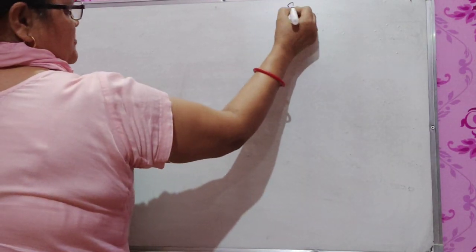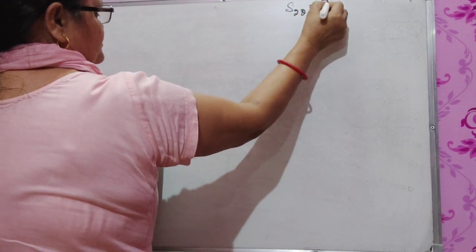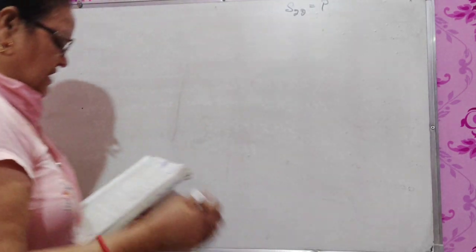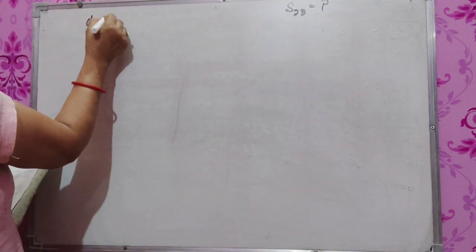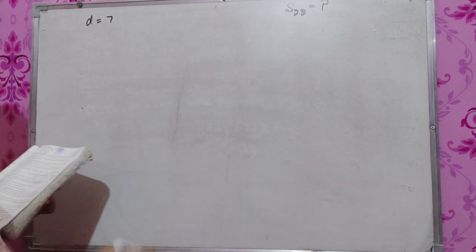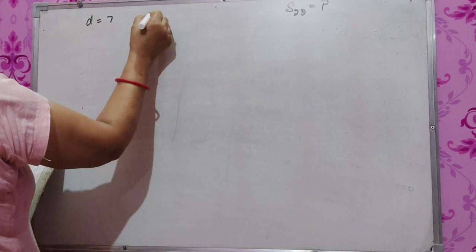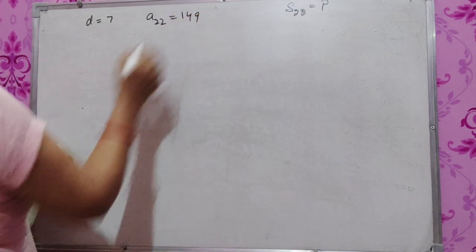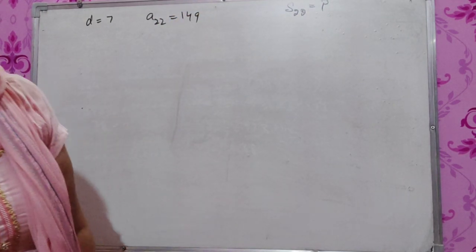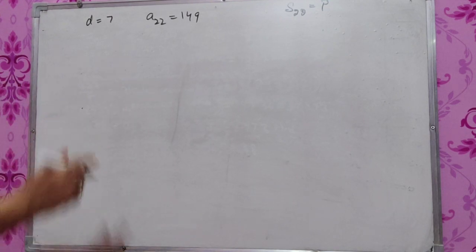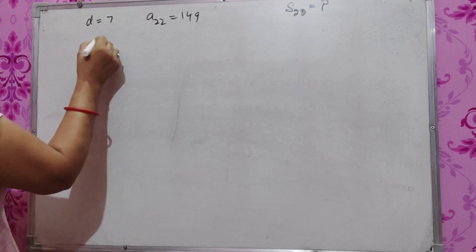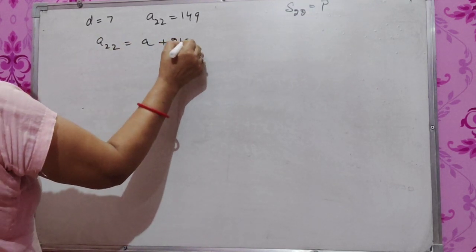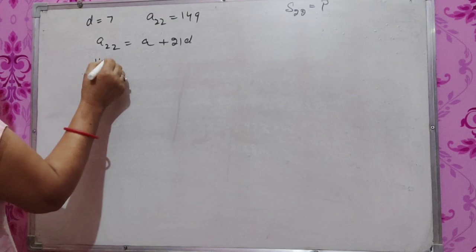We need to find a_22. Given that d equals 7. We have a_22 equals a plus 21d, which equals 149.